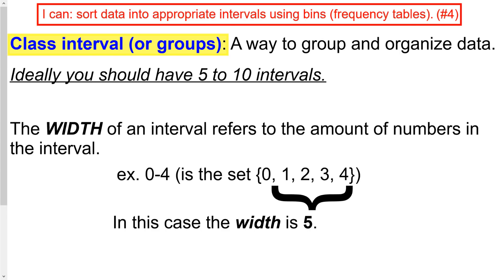We're going to continue on and start talking about what these intervals are all about and how to shrink them down. Class intervals or groups is just a way to group or organize data. Ideally you should have anywhere between 5 and 10 intervals — please make sure you get that down and highlight that part, it's super important.